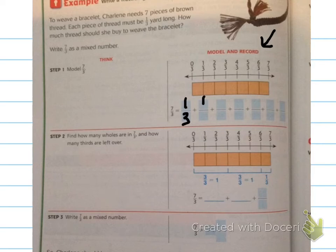So think back to unit fractions: 1 in the numerator, right? We're going to add 1 third seven times, because that would give us 7 thirds. Now, step 2: find how many wholes are in 7 thirds, and how many thirds are left over.